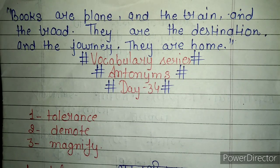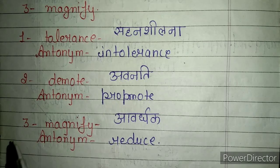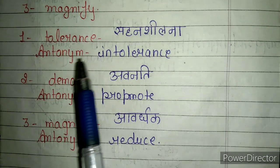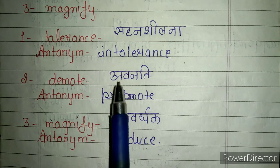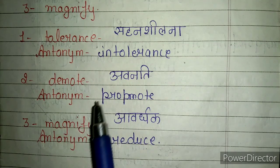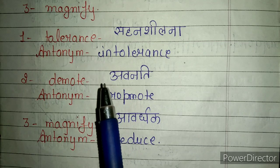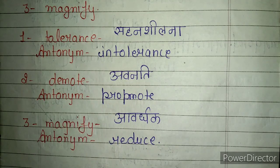Our first word is tolerance. Tolerance का हिंदी में मतलब होता है सहनशील, और इसके लिए antonym यूज़ कर सकते हैं intolerance. बस आपको tolerance के पहले 'in' add कर देना है, तो आपका antonym बन जाएगा।